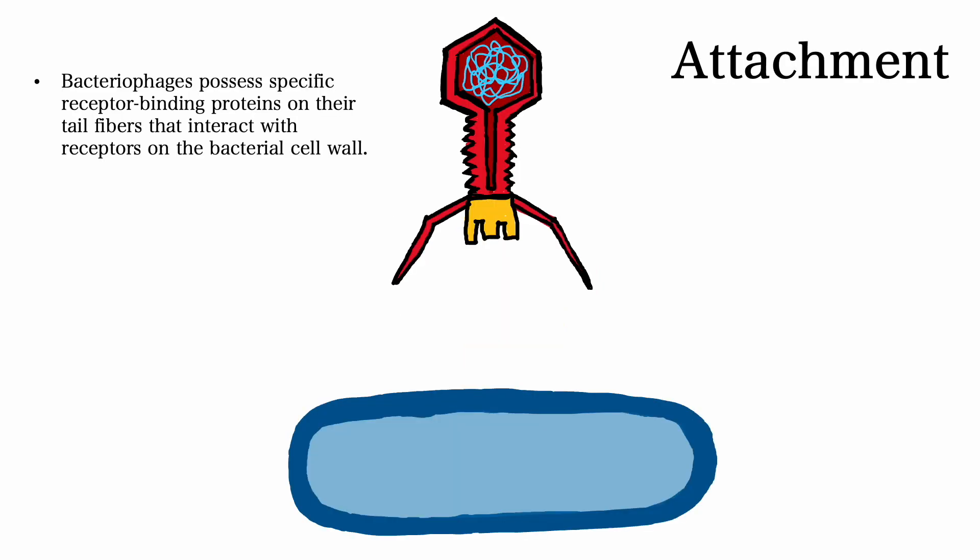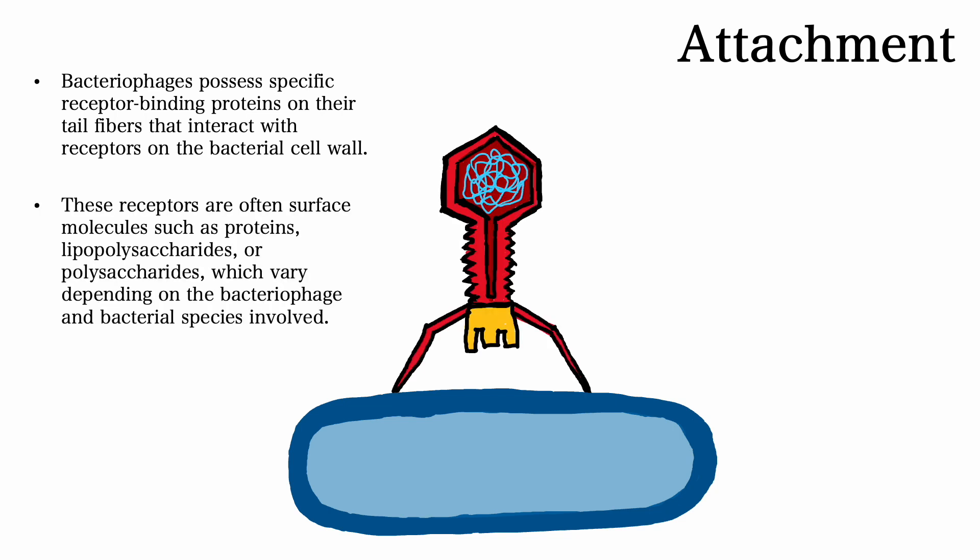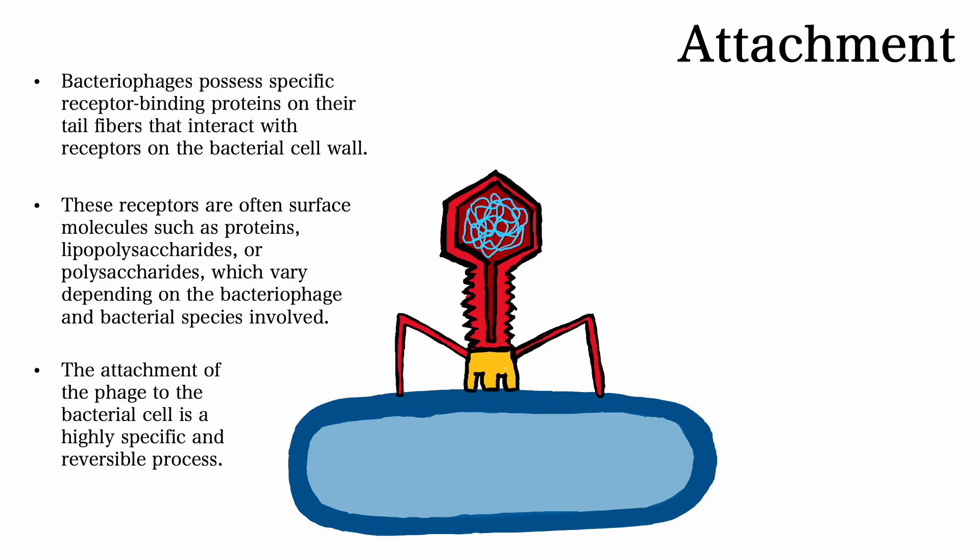The first step in bacteriophage infection is attachment. Bacteriophages possess specific receptor binding proteins on their surface, specifically on their tail fibers, that interact with receptors on the bacterial cell wall. These receptors are often surface molecules such as proteins, lipopolysaccharides, or polysaccharides, which vary depending on the bacteriophage and the bacterial species involved. The attachment of the phage to the bacterial cell is a highly specific and reversible process.